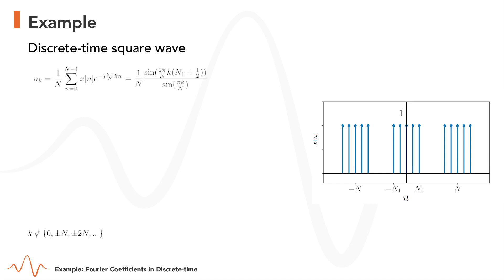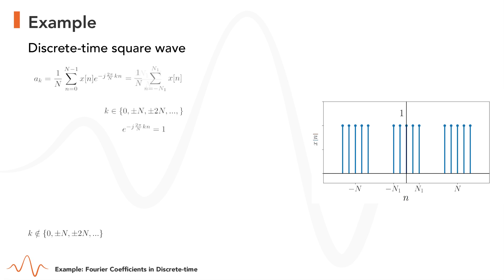In one of the steps of the derivation we had to consider k not to be zero or a multiple of capital N. So we still need to compute the coefficients a_k when k equals zero or a multiple of capital N. This case is rather simple: when k is zero or a multiple of capital N, the multipliers e to the power of minus j 2 pi over capital N times NK are equal to 1 for every n. We are left with a summation over a period of x of n from minus capital N1 until capital N1, where the function is non-zero and equal to 1, giving 2 capital N1 plus 1 over capital N.